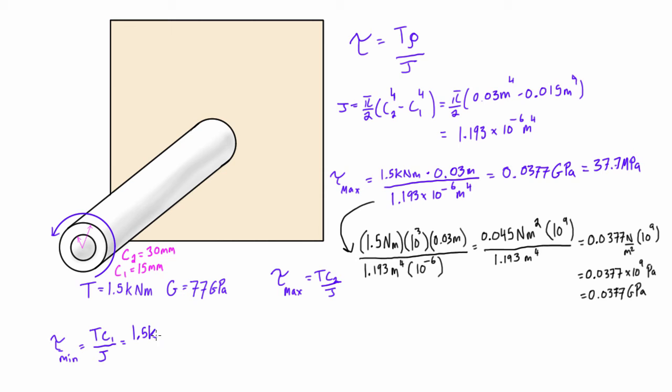So if we plug in these numbers again, we just get 1.5 kilonewton meters times c1, which is just 0.015 meters, and that's all over J, which was 1.193 × 10^-6 meters^4. If we just do that equation using the same logic that we had here, we're going to find out that this is 0.0189 gigapascals.